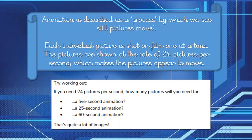Each individual picture is shot on a film, one at a time, and then the pictures are shown at a rate of 24 pictures per second. Think about each second — one, two, three — each of those seconds, they've shown 24 pictures. Think about how many pictures you would need just for a five second animation: you would need 120 pictures just for five seconds. Imagine how many you would need for 25 seconds, or for a 60 second clip — and then imagine how many pictures you would need for a 90 minute film. That's quite a lot of images.